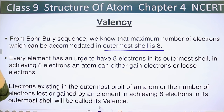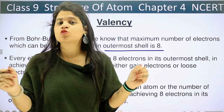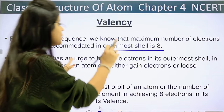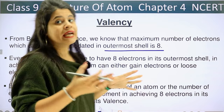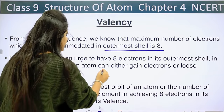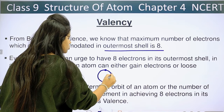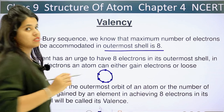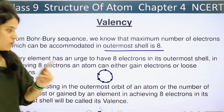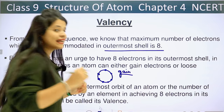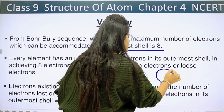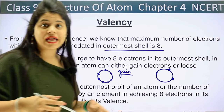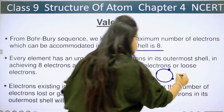Now we have to understand that the outermost shell can hold a maximum of 8 electrons. Every element has an urge to have 8 electrons in its outermost shell. For example, if its outermost shell has 7 electrons, then it needs only 1 more electron to gain.